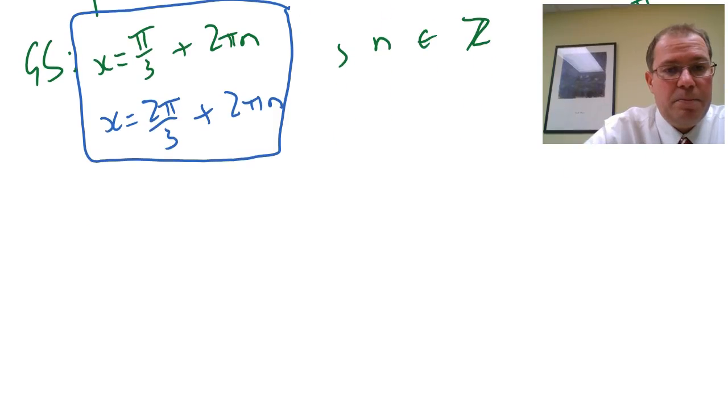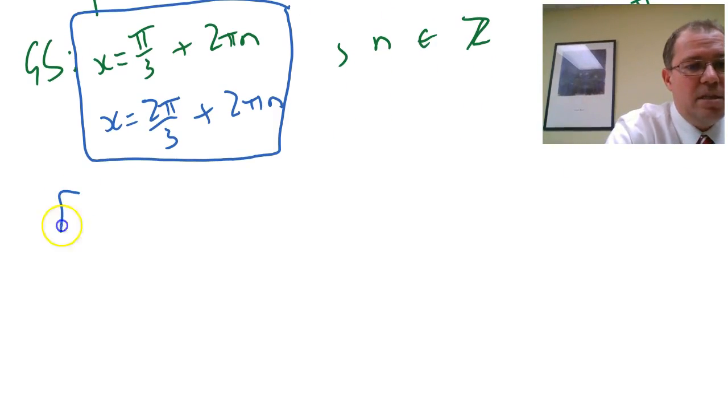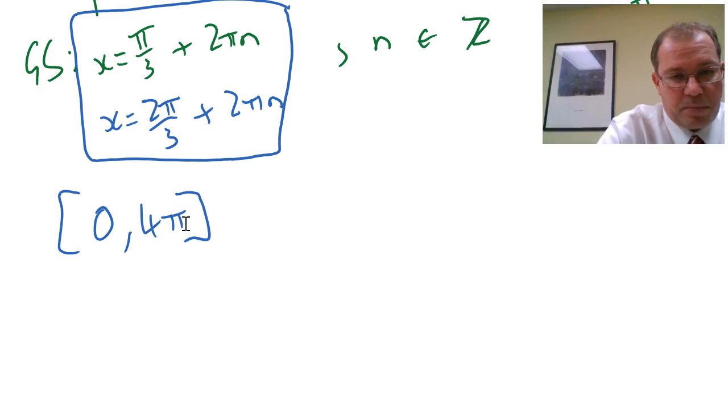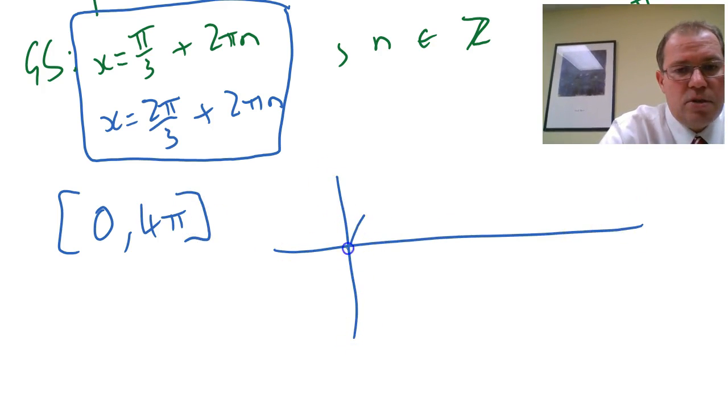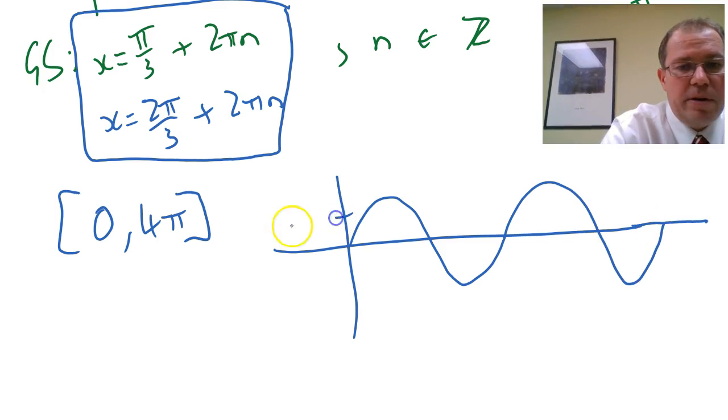Now we're interested in the interval 0 to 4π, so we're only interested in 2 periods. There's 1 period and 2 periods, and we want to know where it's root 3 over 2, so we can see from the graph we should have 4 solutions.